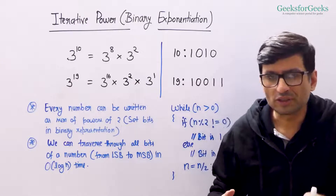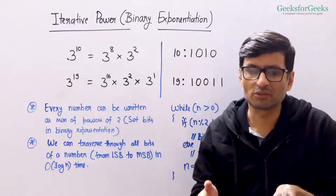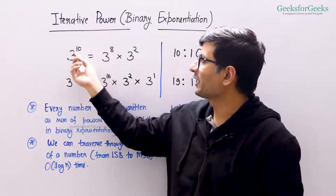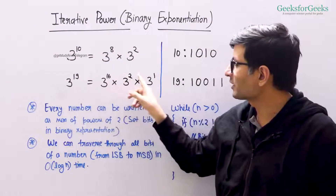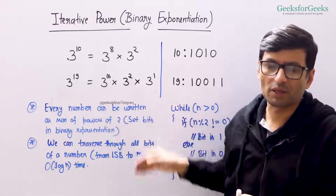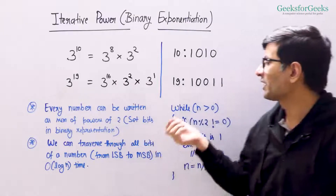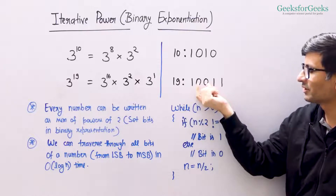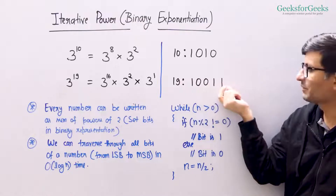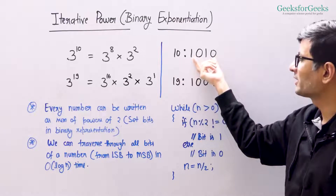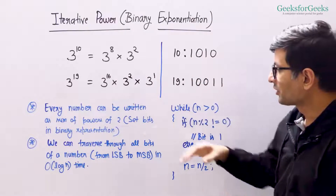The idea of this solution is based on these facts. The first fact is every number can be written as a sum of powers of 2. For example, you can write 10 as 8 plus 2 — both are powers of 2. You can write 19 as 16 plus 2 plus 1; all three are powers of 2. This relates to the binary representation of a number. The binary representation of 19 is 10011 — this bit corresponds to 16, this bit to 2, and this bit to 1. Similarly, 10 can be written as 1010, where this bit corresponds to 8 and this bit to 2.